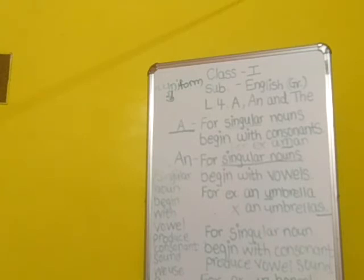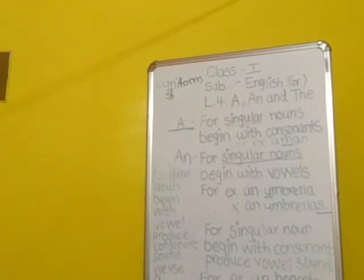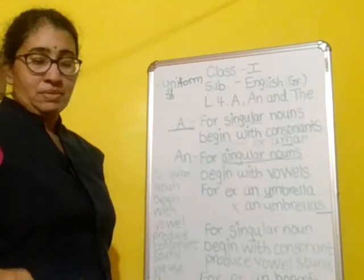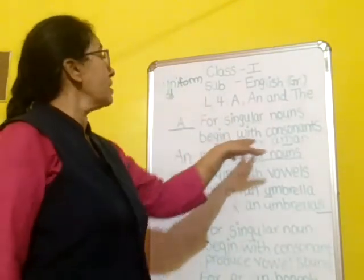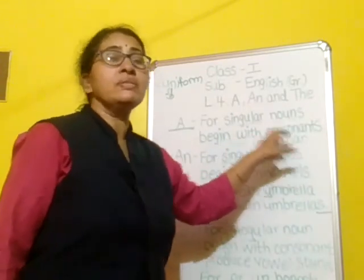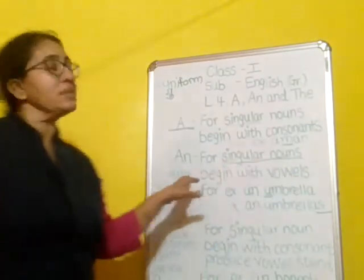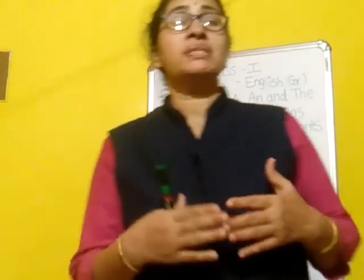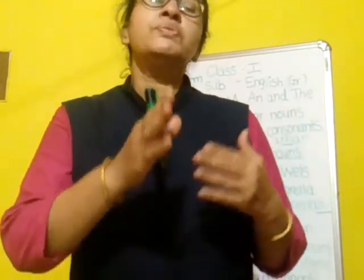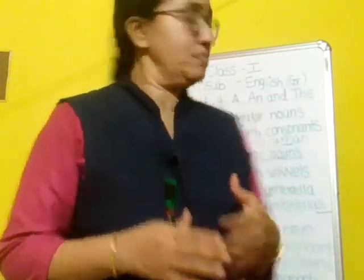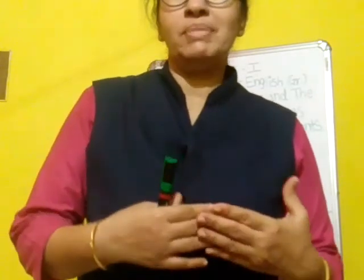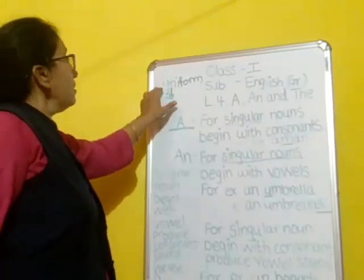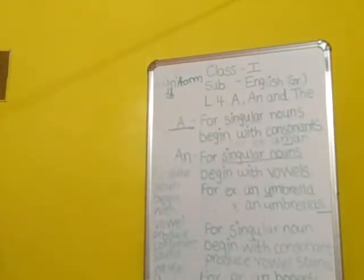To revise: for a singular noun the common condition is to use article 'a' or 'an', and the difference depends only on consonant or vowel. If the noun begins with a consonant, use 'a'; if it begins with a vowel, use 'an'. The important exception: if a word begins with a consonant but produces a vowel sound, use 'an' — for example, 'an honest'. If a word begins with a vowel but produces a consonant sound, use 'a' — for example, 'a uniform'.